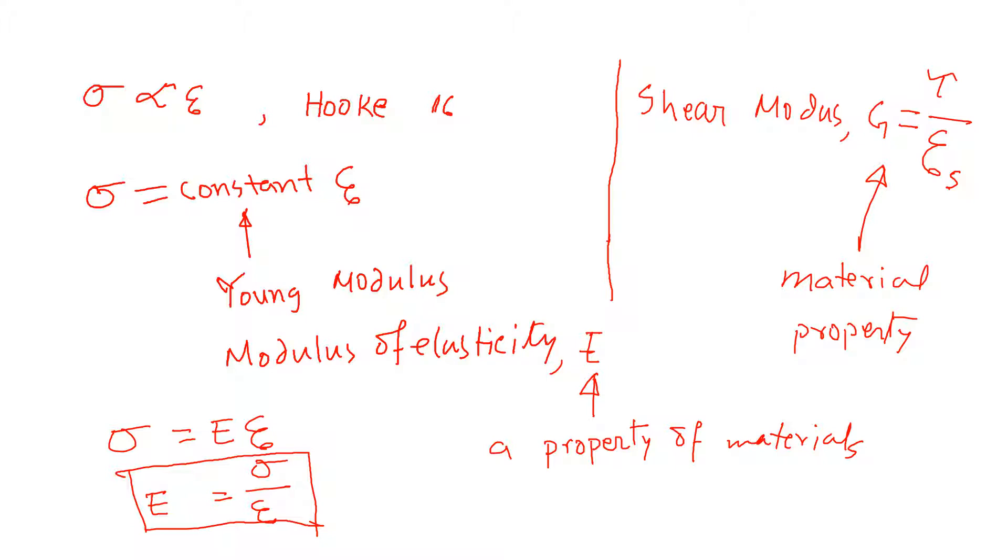It is expressed using E. So, sigma equals E epsilon. Be careful about these two words. Typically, we use this relationship, E equals sigma by epsilon. So, here is the relationship between stress and strain. And this E, the modulus of elasticity, is a property of material.